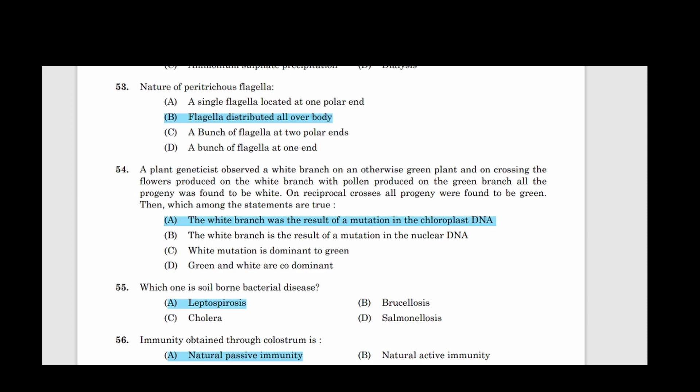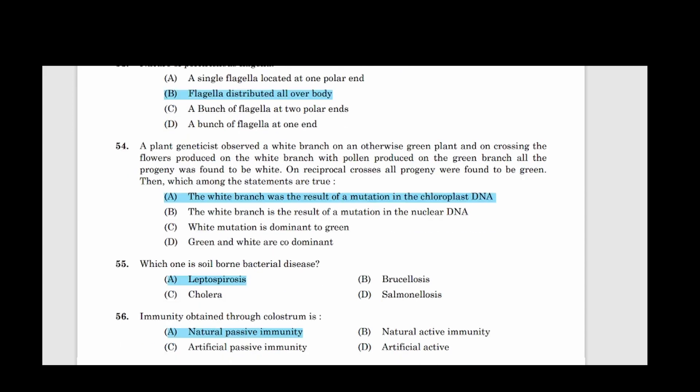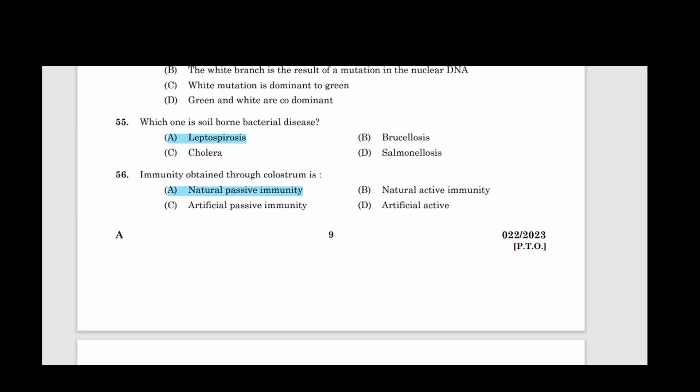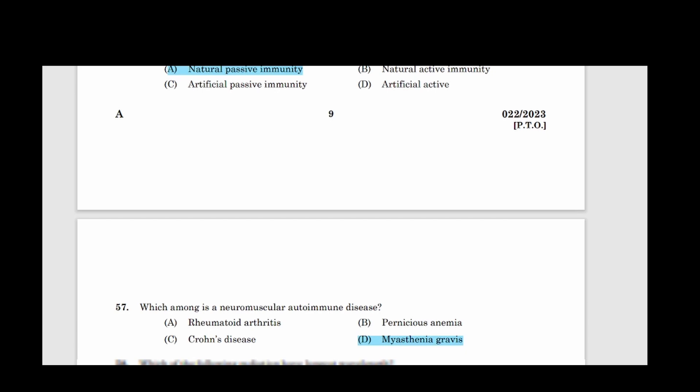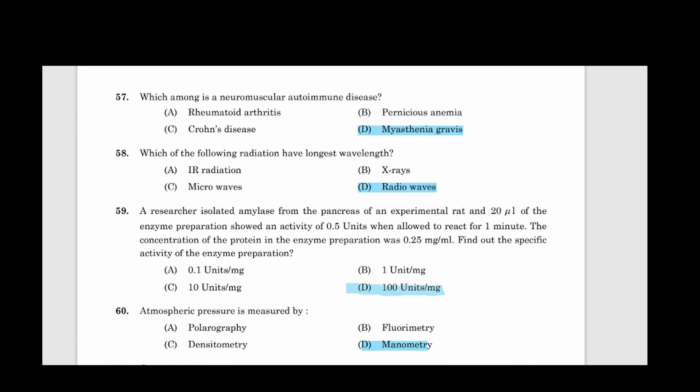55: Which one is soil-borne bacterial disease? Correct answer option A, Leptospirosis. 56: Immunity obtained through colostrum. Answer option A, Natural passive immunity. 57: Which among is a neuromuscular autoimmune disease? Answer option D, Myasthenia gravis. 58: Which of the following radiation have longest wavelength? Answer option D, Radio waves. 59: A researcher isolated amylase from the pancreas of an experimental rat and 20 µl of the enzyme preparation showed an activity of 0.5 units when allowed to react for 1 minute. The concentration of the protein in the enzyme preparation was 0.25 mg per ml. Find out the specific activity of the enzyme preparation. Correct answer option D, 100 units per mg.